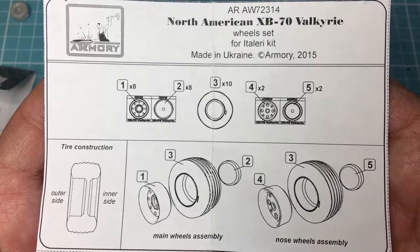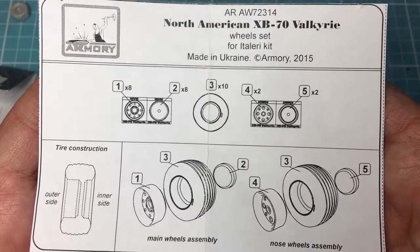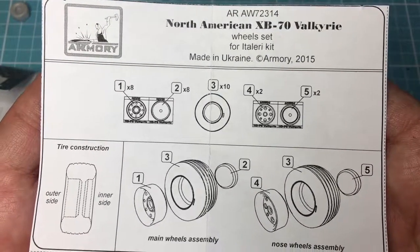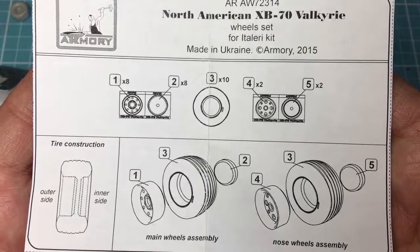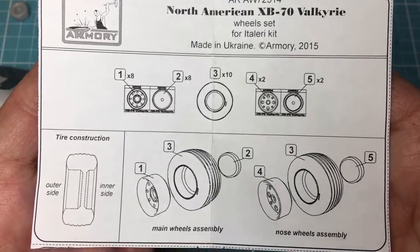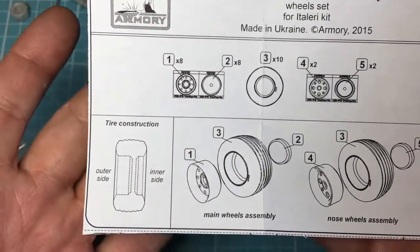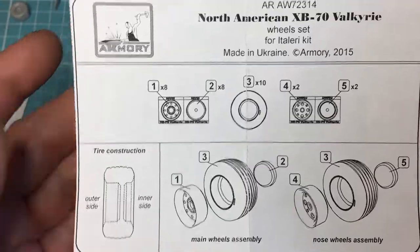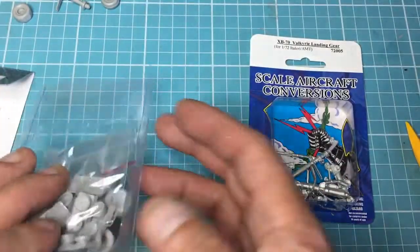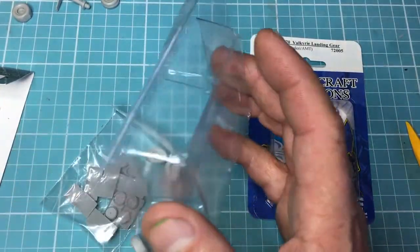We've basically got the same tire part for the front and rear, but we have different inner and outer hubs for the nose and the main landing gear. Here you can see that it's showing you the deeper side is the outside.